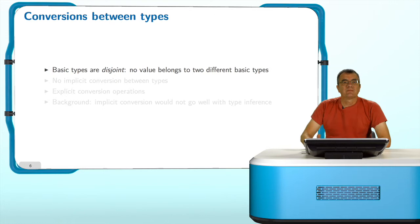This is in fact an important principle in OCaml. All the basic types are disjoint, which means there is no value which belongs at the same time to one type and also to a different type. In contrast to some other programming languages, we have no implicit conversion between data types, which means that if you want to have conversion, then you have to write down the explicit conversion operator.